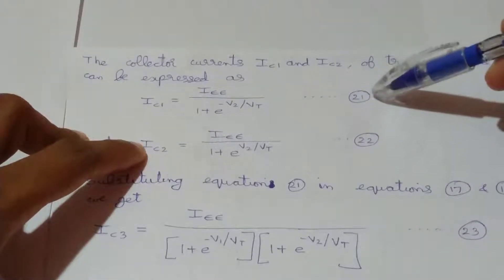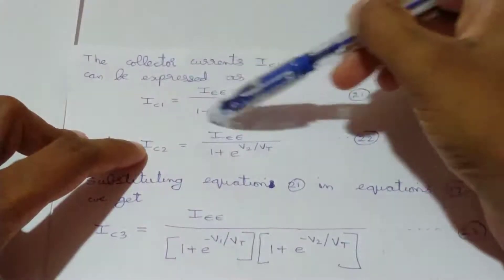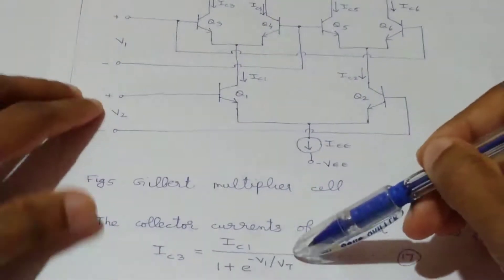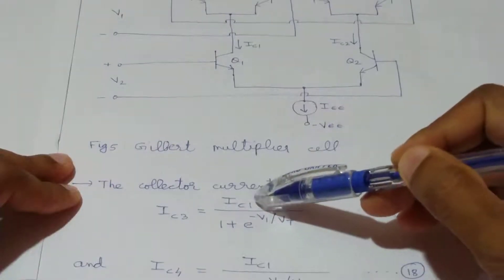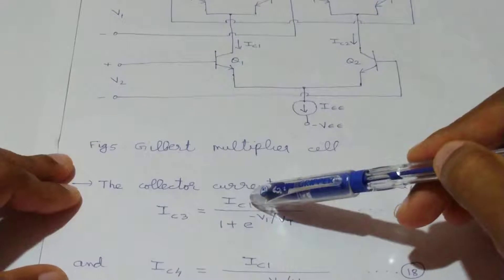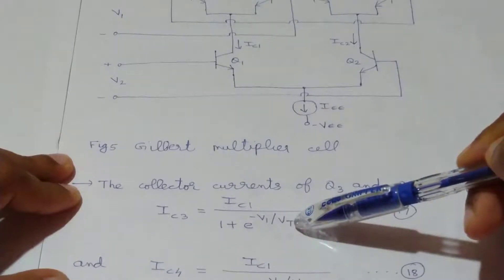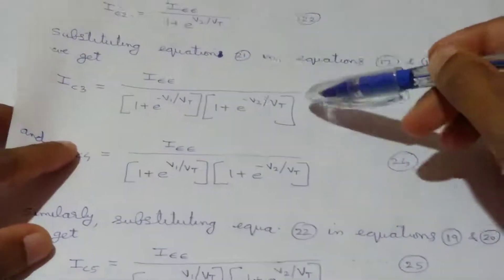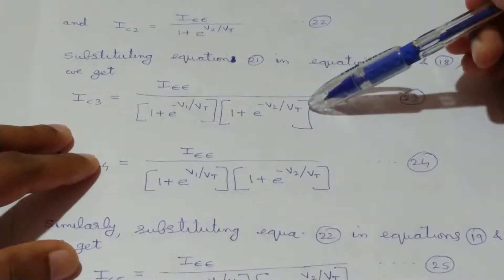Now we substitute equation 21 into equations 17 and 18. In equations 17 and 18, for IC1 we substitute IEE divided by (1 + e raised to minus V2 over Vt). Hence IC3 becomes IEE divided by (1 + e raised to minus V1 over Vt) times (1 + e raised to minus V2 over Vt). These are equations 23 and 24.